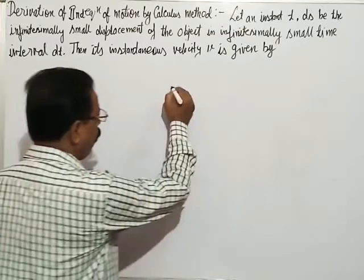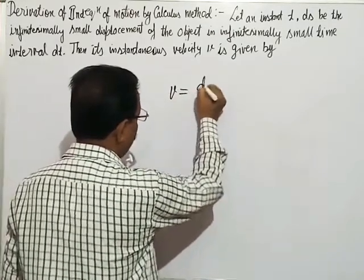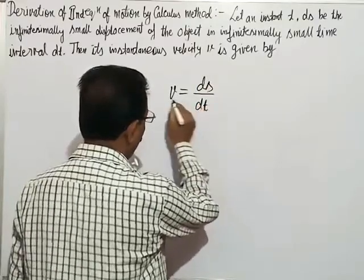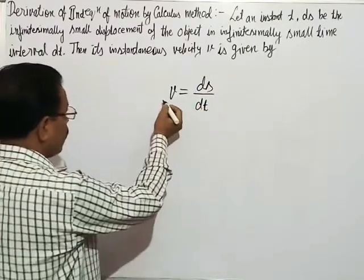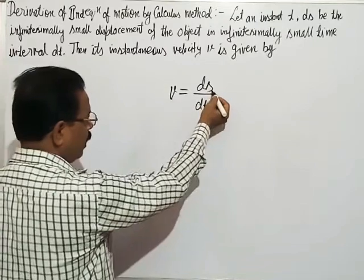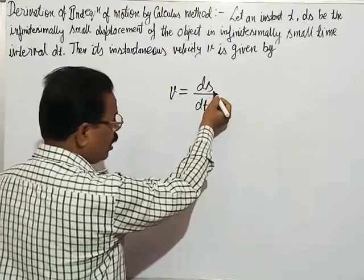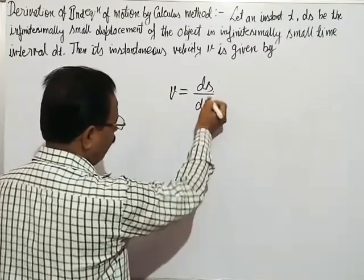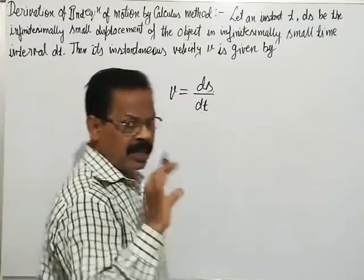v = ds/dt. What is v? v is instantaneous velocity, ds is infinitesimally small displacement, and dt is infinitesimally small time interval.